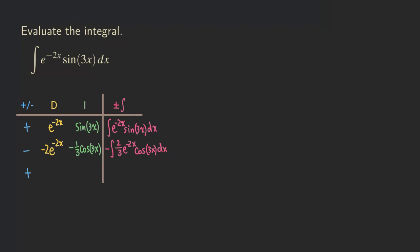Doing it one more time: we differentiate negative 2 e to the negative 2x to get positive 4 e to the negative 2x. Then we integrate negative 1 over 3 cosine of 3x to get negative 1 over 9 sine of 3x. So looking at this integral, it's going to be positive times negative, giving us a negative integral of 4 over 9 times e to the negative 2x sine of 3x dx.